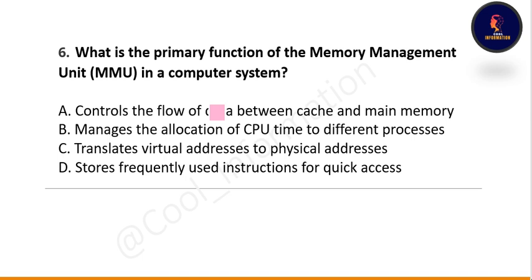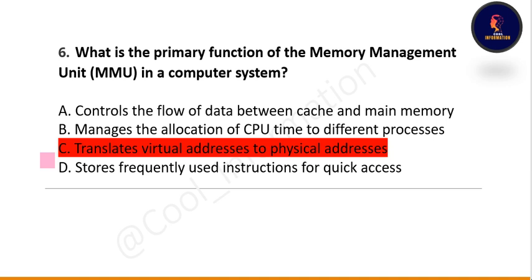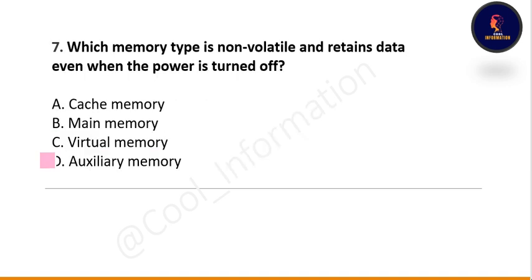Next question: what is the primary function of the Memory Management Unit (MMU) in a computer system? Option A: controls the flow of data between cache and main memory. Option B: manages the allocation of CPU time to different processes. Option C: translates virtual addresses to physical addresses. Option D: stores frequently used instructions for quick access. The correct option is C — translates virtual addresses to physical addresses.